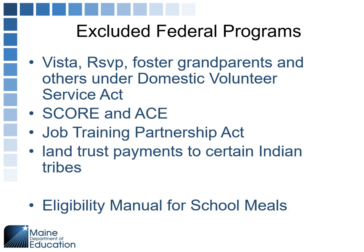Excluded federal programs do not count as income: the VISTA program, RSVP, Foster Grandparents, and other Domestic Volunteer Service Act programs, SCORE, AIDS Job Training Partnership, and land trust payments to certain Indian tribes. There's a manual called the Eligibility Manual for School Meals — there's a link on the web page. It's an excellent reference tool that also helps with approving applications. Bookmark it, print it off, have it handy, and use it.